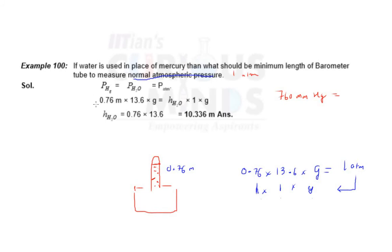So basically we have H into ρ into g to equate this, so we get the value of H. So you can see 0.76 into 13.6 g, this is 1 atm, this is equal to height of water. So the height will be more because the density is very less of water. You can see density is less, 13.6 g.